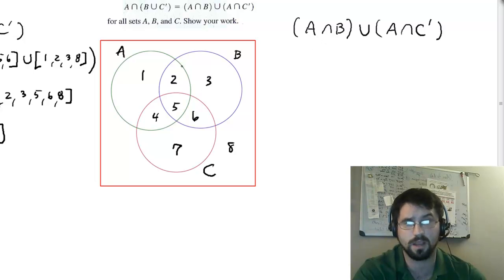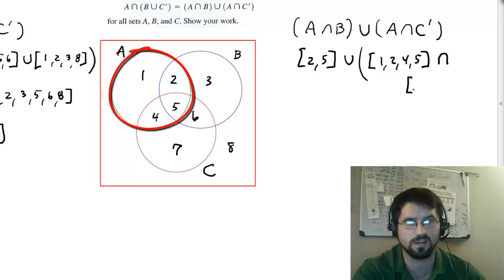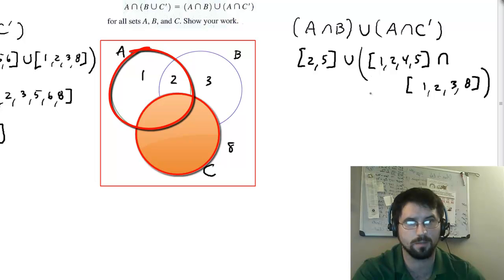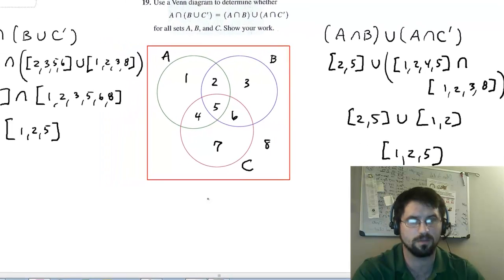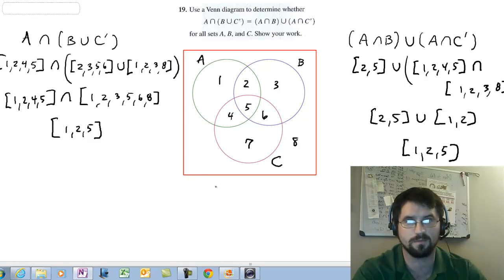I start with A intersect B. A intersect B is right here. It's in the center of A and B. It's where they overlap, those two circles. And it's two and five. I'm going to unite that with A intersect C complement. So maybe I'll do this out the long way. A we know is one, two, four, and five. Intersect with C complement, which is one, two, three, and eight. What do those two share in common? The answer is one and two. And I'm going to unite that with two and five, which I'm taking from up here. And my result is one, two, and five. So these two things are the same. So I have determined that they are equal.